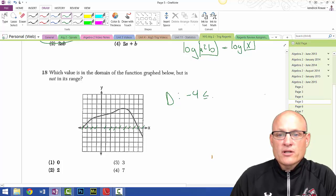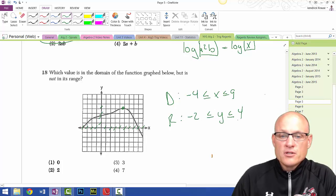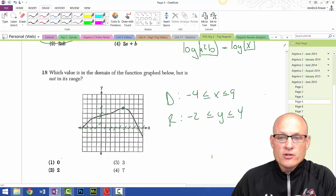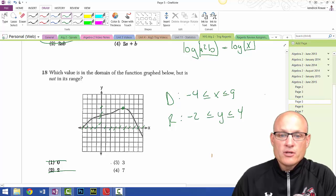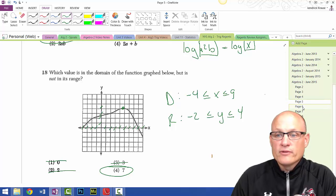Negative 4 less than or equal to x, less than or equal to 9. And the range is pretty simple. It goes from negative 2 which is less than or equal to y, which is less than or equal to 4. So is 0 in both? Yes. 2 is in both. 3 is in both. 7 is in the domain but not in the range.